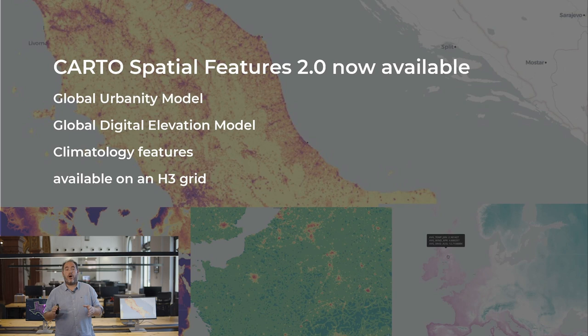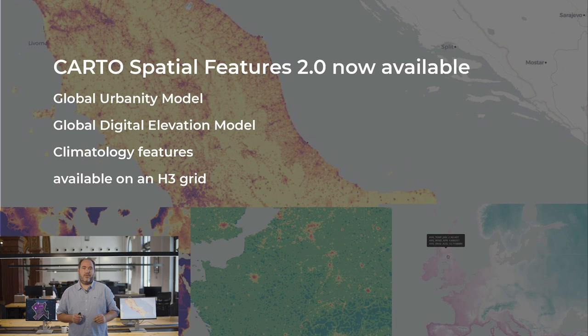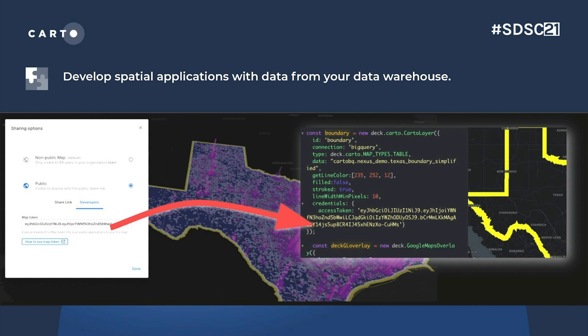We are also very happy to announce the availability of Carto Spatial Features — our global dataset of core features for spatial modeling, now including new variables for urbanity levels, elevations, and climatology, along with demographics and point of interest data. With this release, we're also supporting a new geographic support system: the H3 Global Grid System. Analysts will be able to characterize in greater detail the effects that different locations have on their business performance metrics.